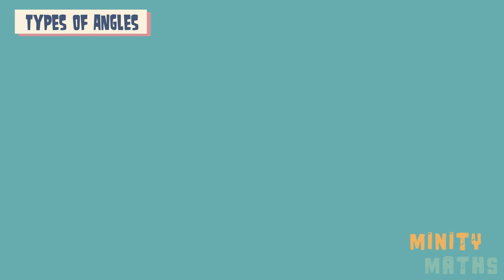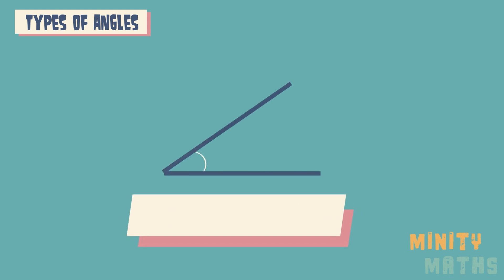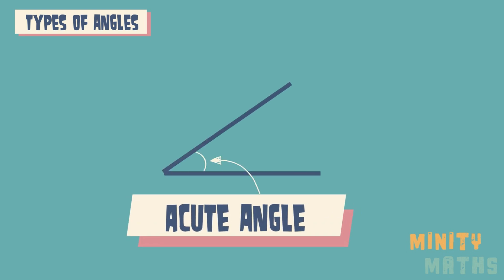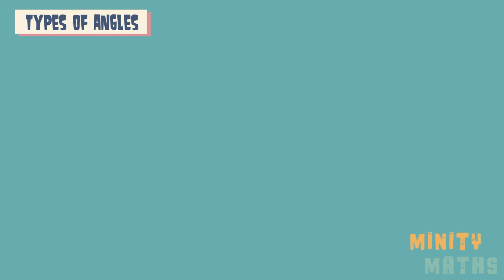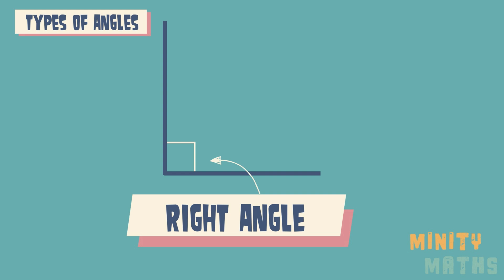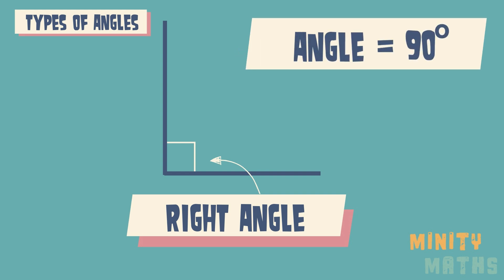There are different types of angles. Acute angles are angles which are greater than zero and less than 90 degrees. A right angle measures exactly 90 degrees, and the angle is indicated by a square rather than a curve.